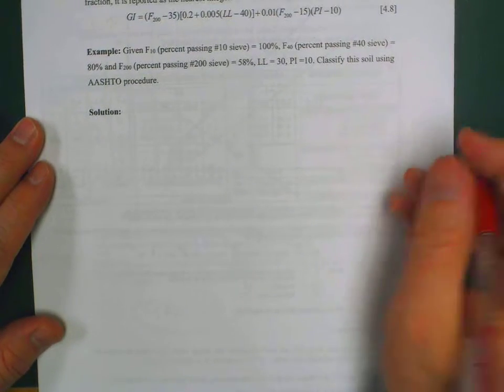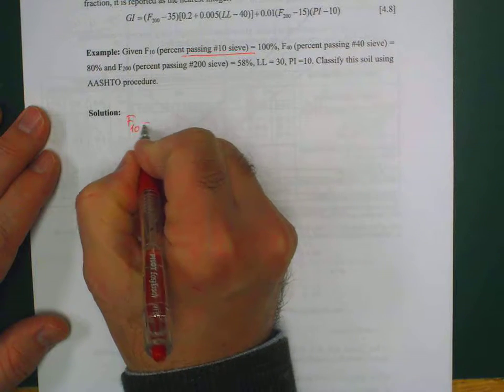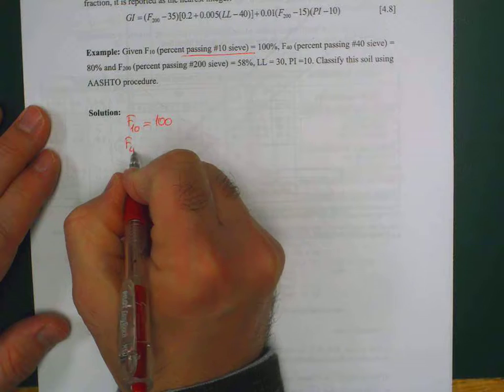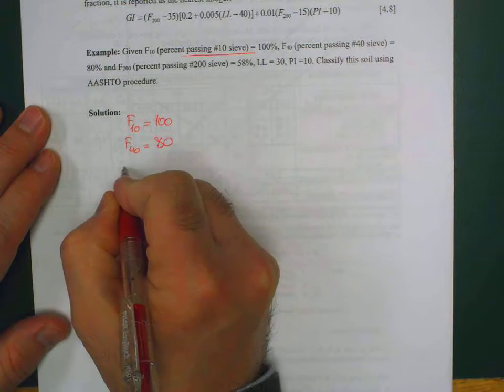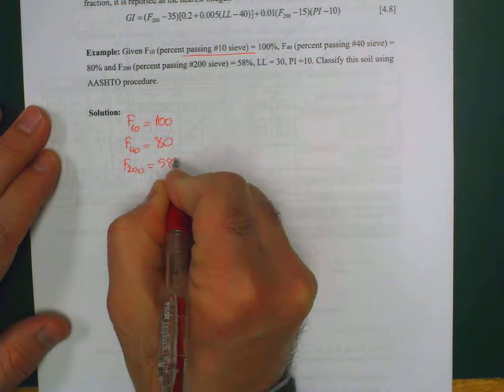We have F10, percent passing number 10 sieve, is 100%. F40 is 80%, and F200 is 58%. These are all percentages.